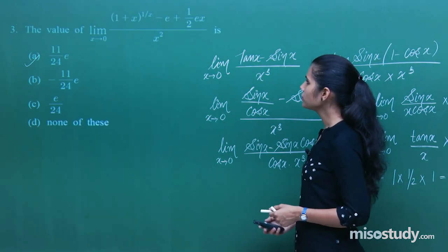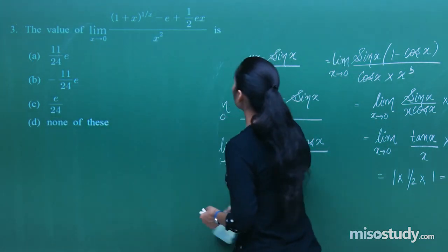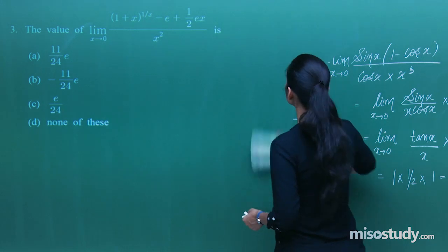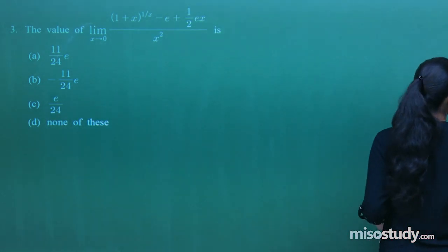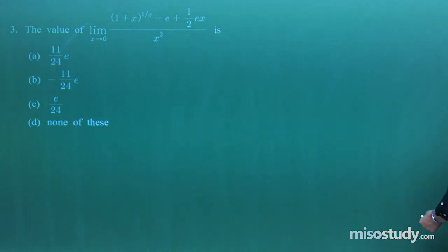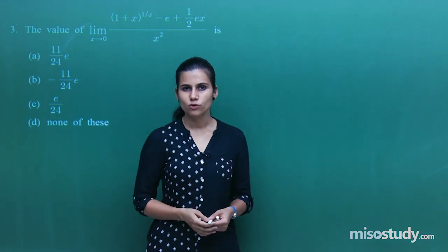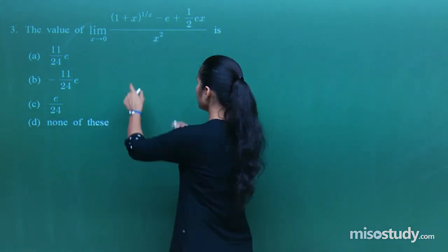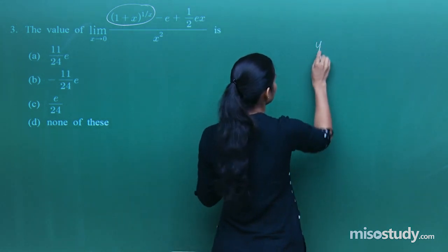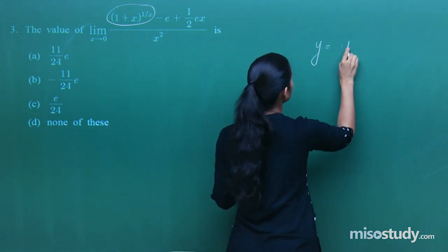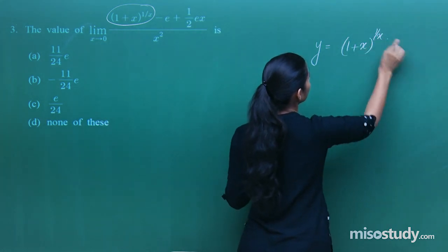Moving on to the next question: what is the value of this particular limit? The main expression playing a role here is (1+x)^(1/x). Let y = (1+x)^(1/x). To bring the exponent 1/x forward, we take log: log y = (1/x)·log(1+x).